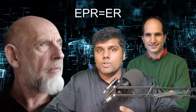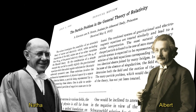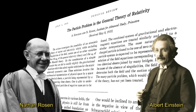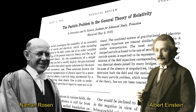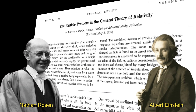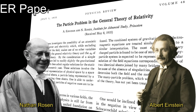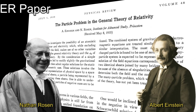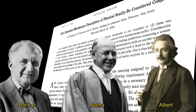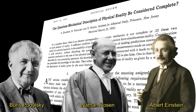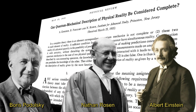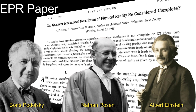A recent idea proposed by Suskind and Maldacena is EPR equals ER. In 1935, Albert Einstein wrote two papers. One was written with Nathan Rosen about tunnels in space-time called wormholes — this is called the Einstein-Rosen, or ER, paper. The other paper was about the possibility of quantum entanglement, written with Nathan Rosen and Boris Podolsky. Hence, this is called the EPR paper.